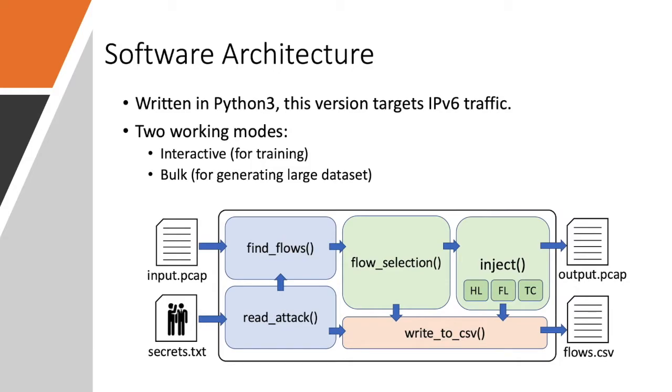Once the conversations are found, the injection process starts. This current version considers three injection mechanisms that are the flow label, the traffic class and the hop limit fields of the IPv6 protocol. As a result, pcapStego produces an output pcap file containing all the original packets along with the modified conversation to contain the secrets.